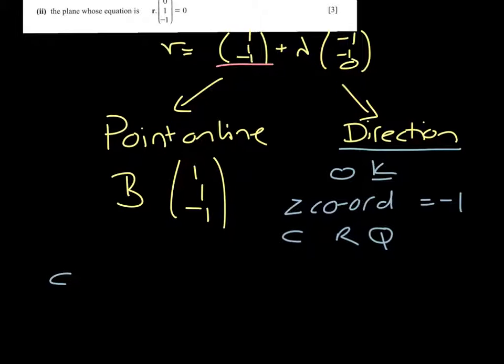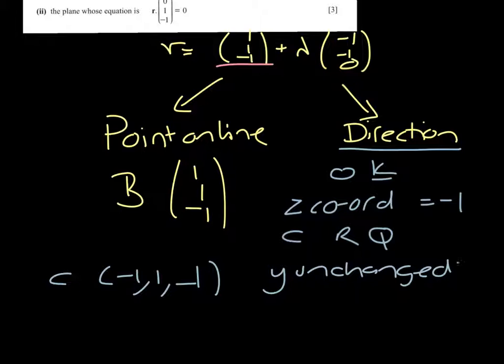So C is the point (-1, 1, -1). I can see straight away it's not on the line because it has the same y unchanged. So that is not on the line.